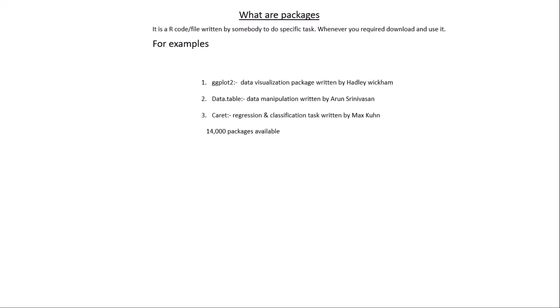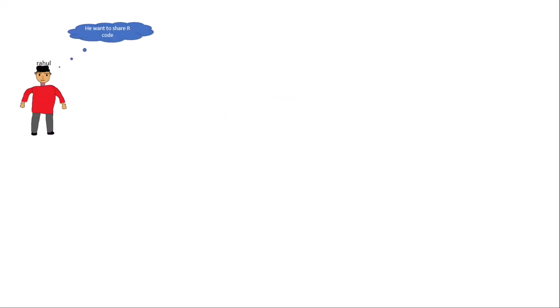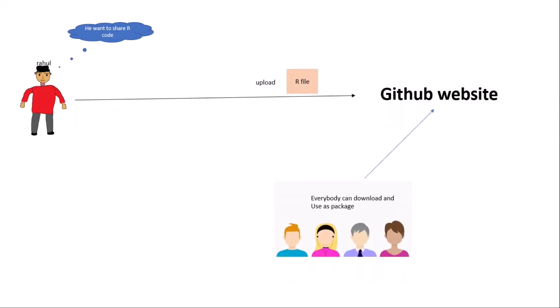Suppose this is Rahul and he wants to share R code with the R community. What he does is upload the R code to GitHub. GitHub is a very famous website for programmers where you can host R code, and there are lots of R packages found there. If your code is available on GitHub, everybody can download it and use it as a package.